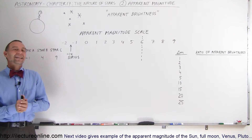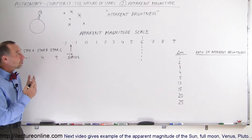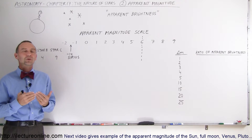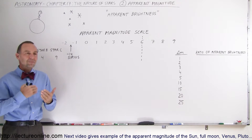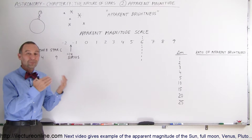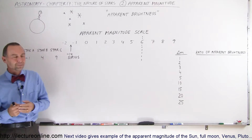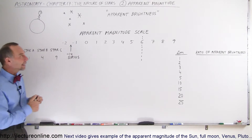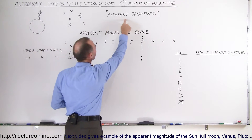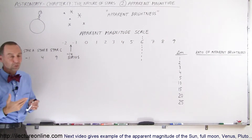Welcome to Adelaide Turnline. In this second video we're going to take a look at something called the apparent magnitude. It's a means of determining which star is brighter and which star is dimmer. The key word here is apparent — the way it appears to us.